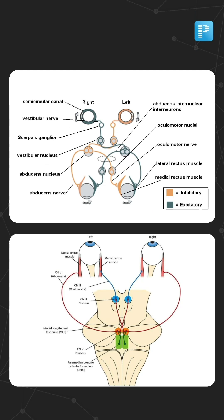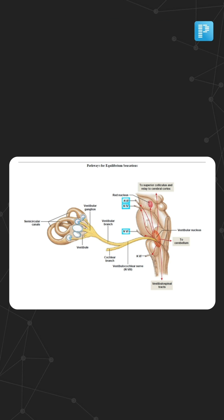Now, is this normal or abnormal? This is a normal occurrence in all of us. It allows us to understand whether our vestibular pathway — meaning the vestibular nerve, the vestibular nucleus, the medial longitudinal fasciculus, and the third, fourth, and sixth nerve nuclei — are all functioning properly.